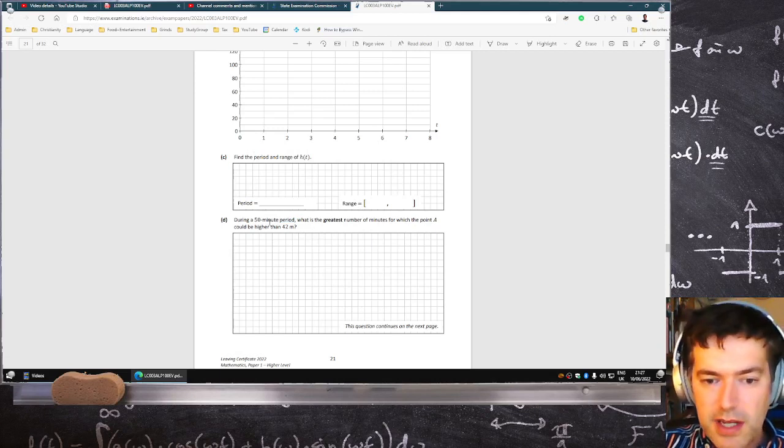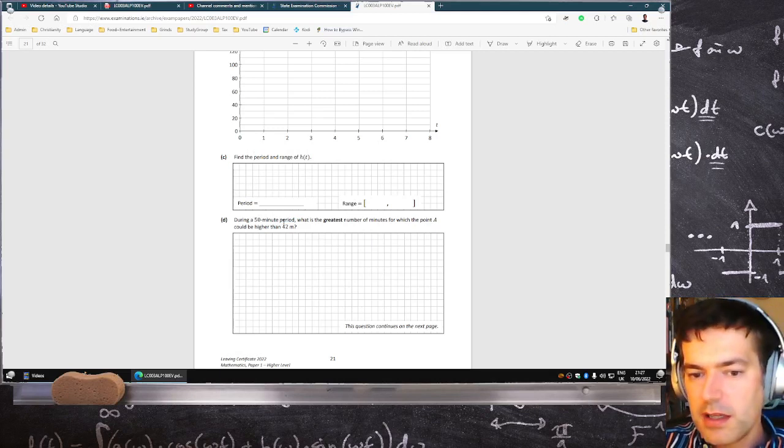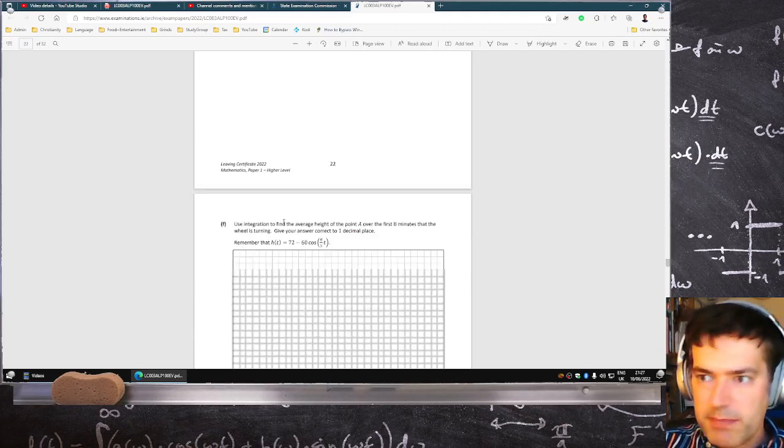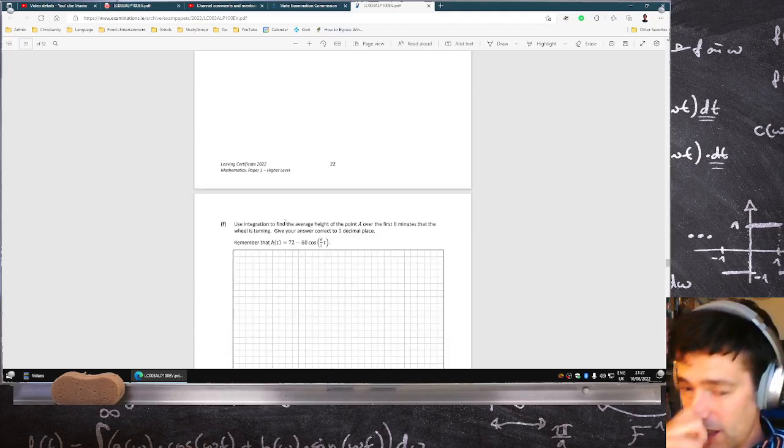It was really, really, really bad of the exam writer to use the word period here right after asking you to find the period. And I agree with that person who posted the comment. I'm sorry, I don't remember your name, but yeah, 50-minute period. I could understand why you would think the Ferris wheel has been slowed down. So I didn't like that either. That's two things I thought were really bad.